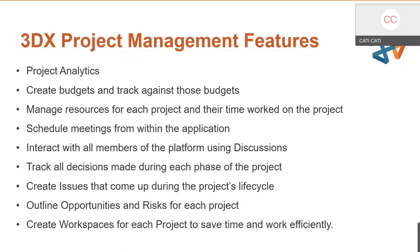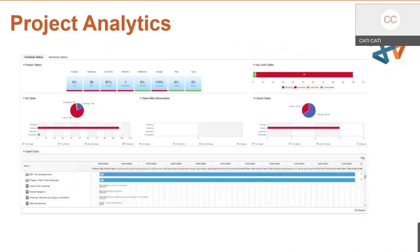At a high level, analytics show what the project looks like when you get into the main project summary page. You'll see your project status, top-level tasks, all tasks for the project, and the status for each one. If there are any tasks with deliverables, any critical tasks, and a Gantt chart showing where you are in the project, what's been completed, what hasn't, and when things are due.